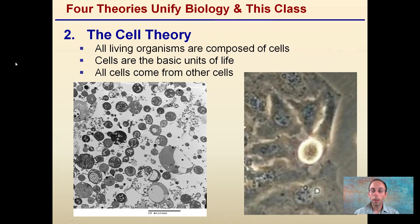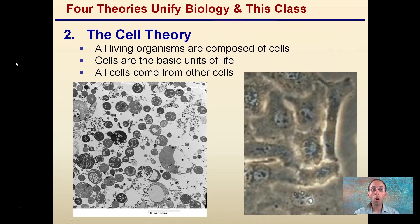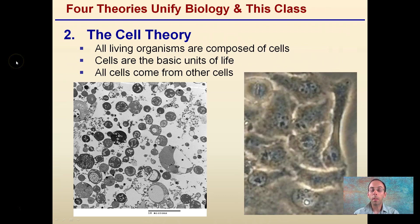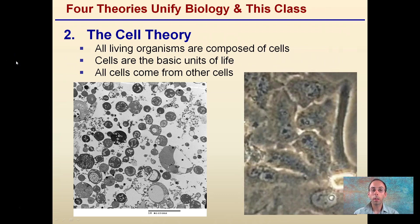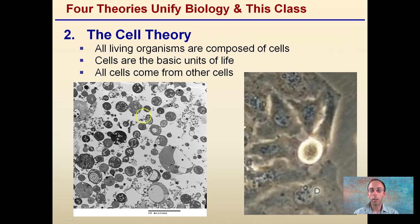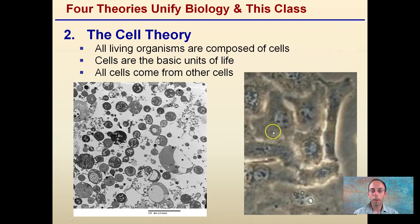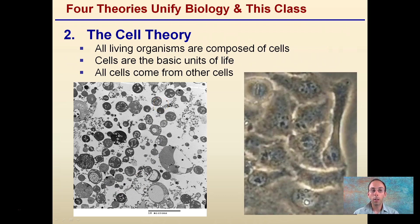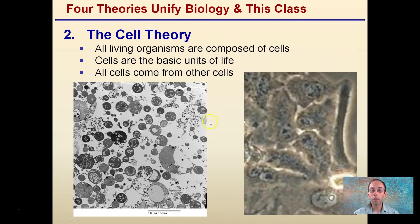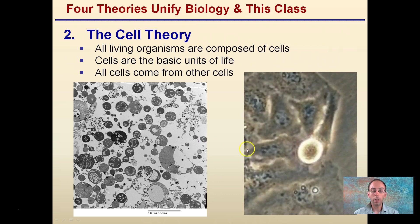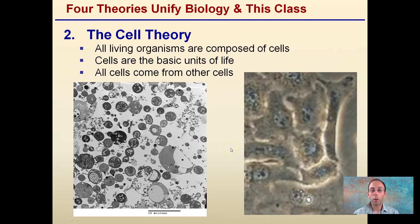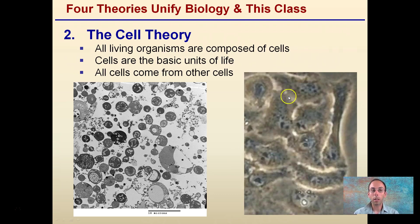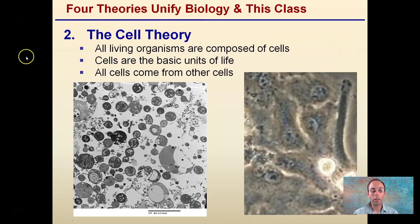The second theory is cell theory. All living organisms are composed of cells. Cells are the basic units of life. All cells come from other cells. You can see cells dividing in this picture. All cells come from other cells makes sense when you see cells dividing, though it does bring up the question of where the first cell came from — but for now we're just looking at the general idea of cell theory.